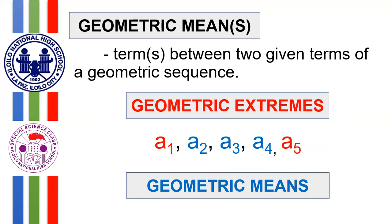In this particular given, since there are three terms in between, there are three geometric means. It's possible that you are asked for only one geometric mean, two geometric means, three geometric means, and so on, so you have to be mindful of the process. I will be discussing in detail how to determine the common ratio, and with that we will be able to determine the geometric means. There are various methods, but for now I will stick with one.